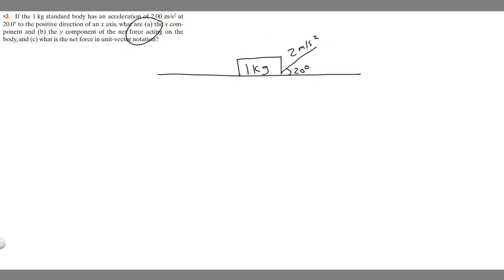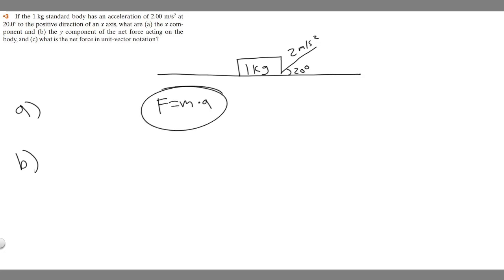So we're going to start with A. We're trying to find the x component, and then we can do A and B at the same time — the y component of the net force acting on the body. Keep in mind the formula for force is force equals mass times acceleration. So I'm going to call the force in the x-direction f sub x, and the one in the y-direction is just going to be f sub y.